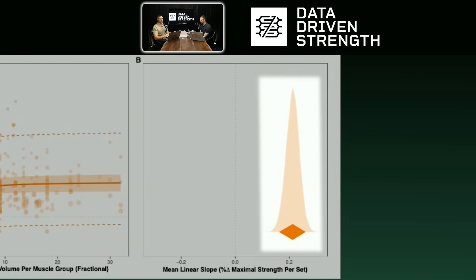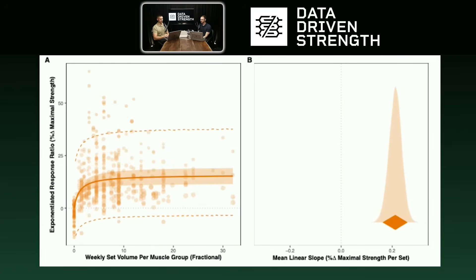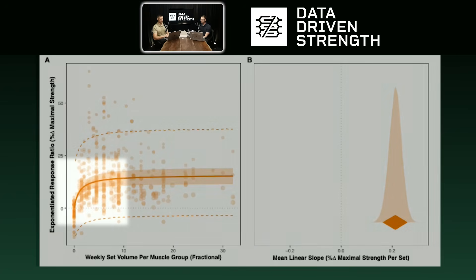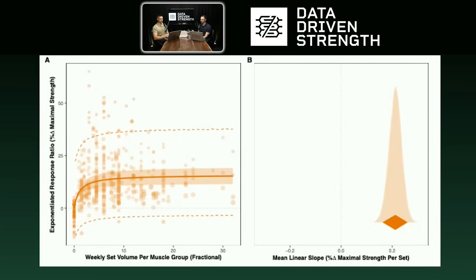And then on the right-hand side, you can see the mean linear slope at the average set volume in the data set, and that average was around 10 fractional sets per week. So basically what we see by that diamond being exclusively on the right-hand side of zero is that the dose response is generally positive. That's just a way to confirm the directionality and confidence in the directionality. So we can say with pretty high confidence that the dose response relationship is positive. At the same time, we do of course see that there are diminishing returns. So we see pretty early on there's a really strong, robust response, which is what you'd expect when you go from no training to some training. And then you see that it tapers off and then eventually it almost looks like it plateaus.